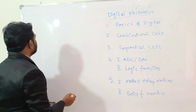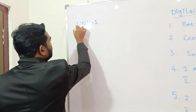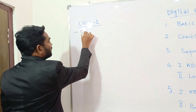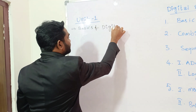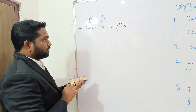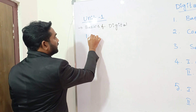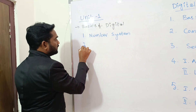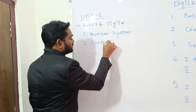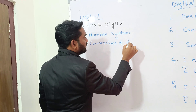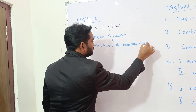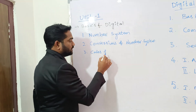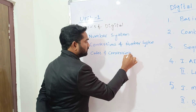Let me explain the syllabus unit-wise and topic-wise. Unit one is Basics of Digital. In Basics of Digital, the first part we are going to cover is Number System, and the second part is Conversions of Number System.